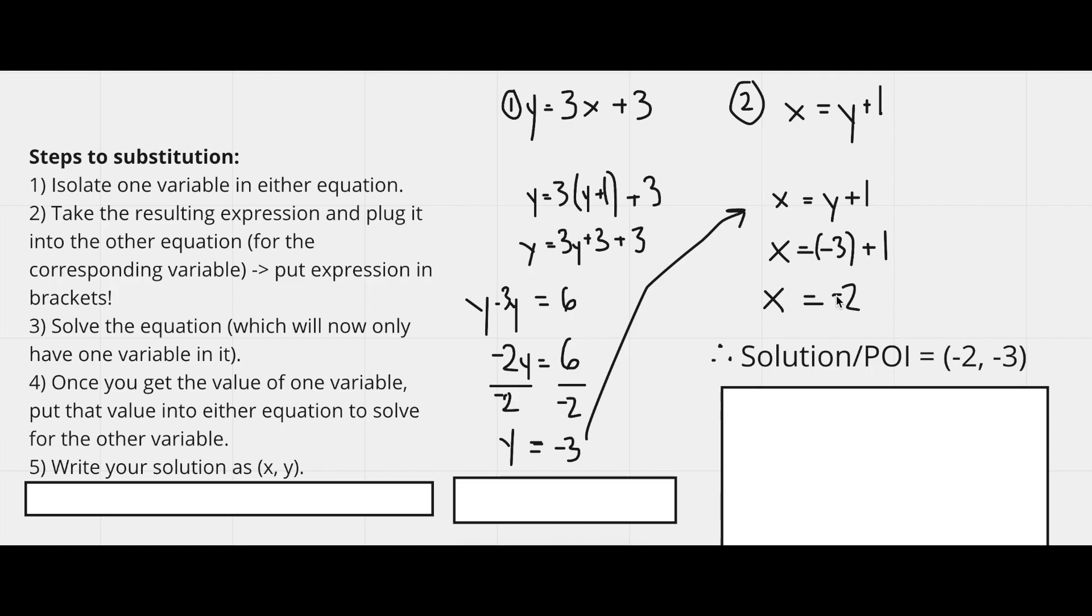x negative 2, and y negative 3. What I mean by point of intersection is that if these two lines were to be graphed, they would meet at this intersection point right here.